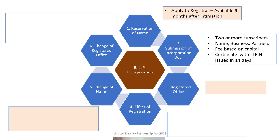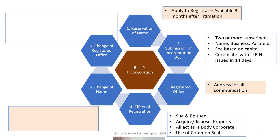The registrar will issue a certificate of incorporation along with an LLP Identity Number (LLPIN). The certificate of incorporation mentions the registered office, which is the address for all communication. The certificate of incorporation is a conclusive document entitling the company to acquire a separate legal entity capable of suing and being sued, acquiring property, and using a common seal. With this, the entity comes into being.